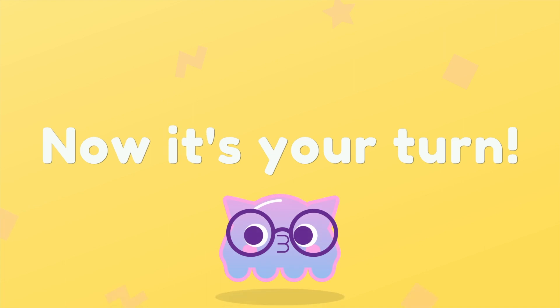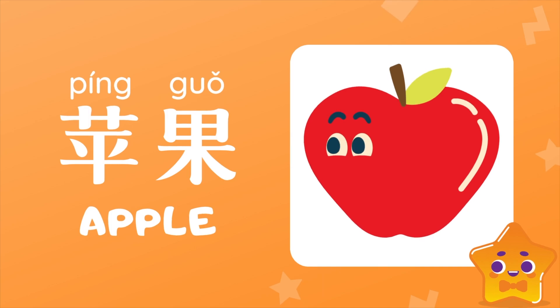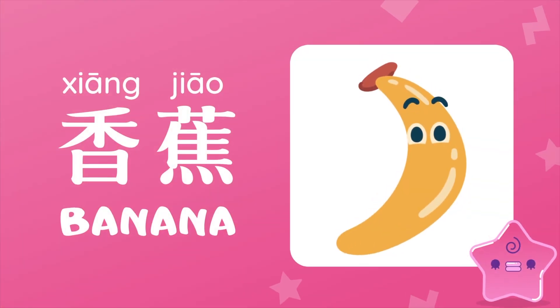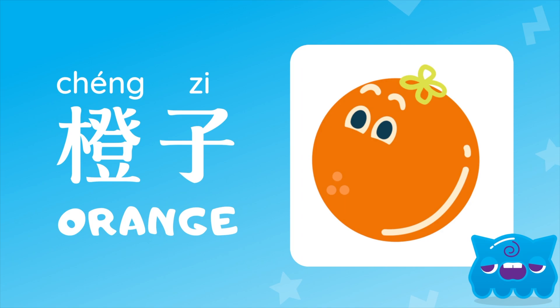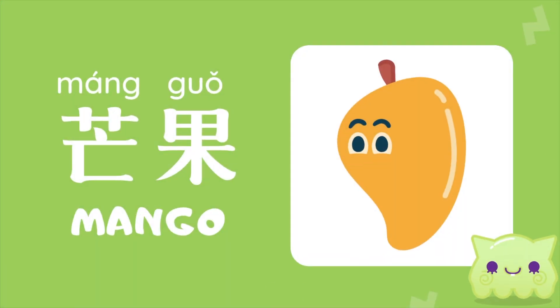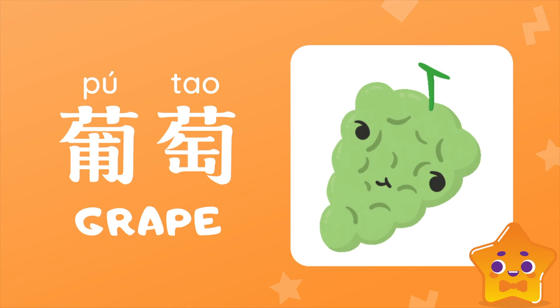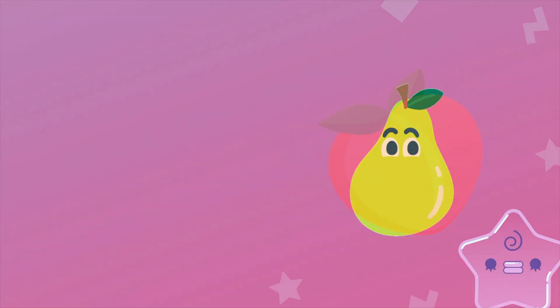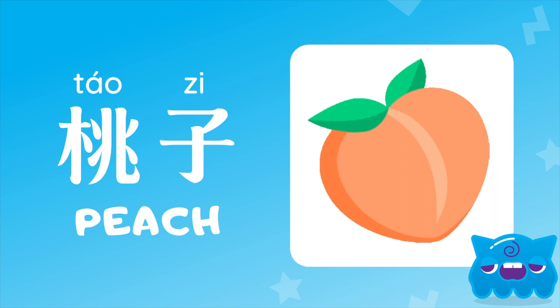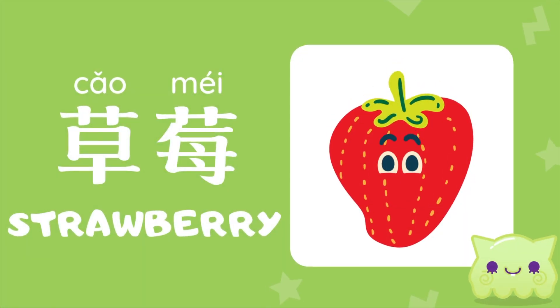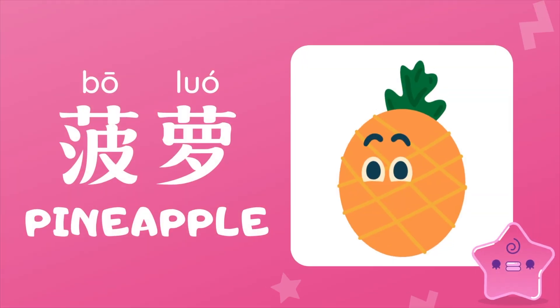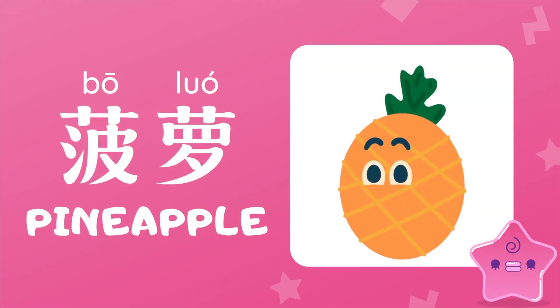Let's read them out. 苹果. 香蕉. 橙子. 芒果. 葡萄. 梨. 桃子. 草莓. 西瓜. 菠萝.